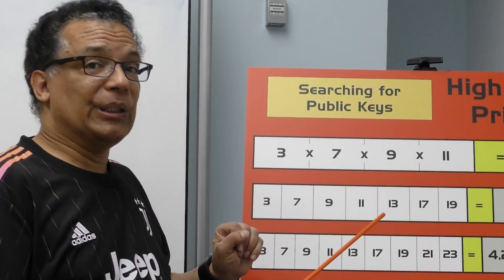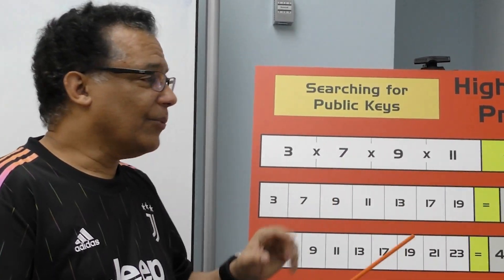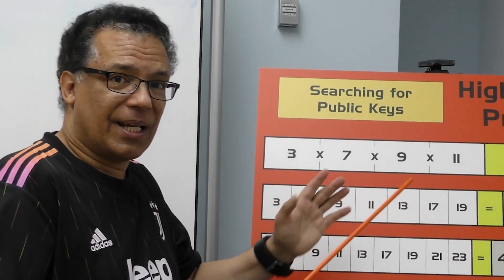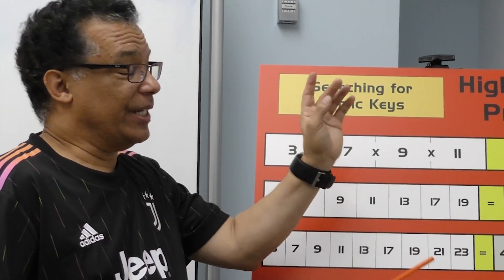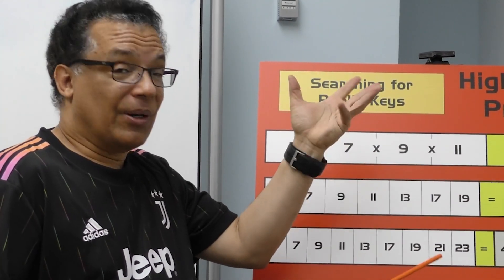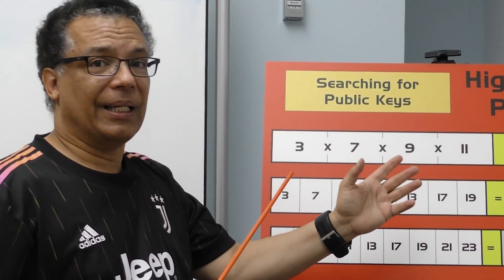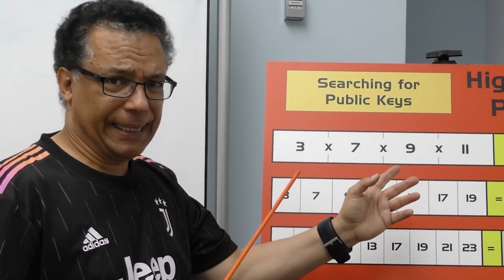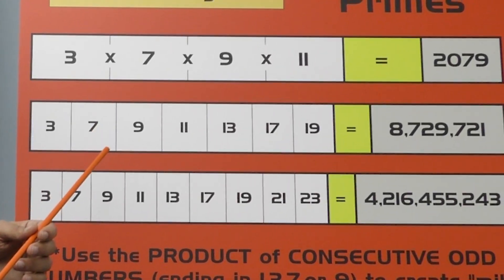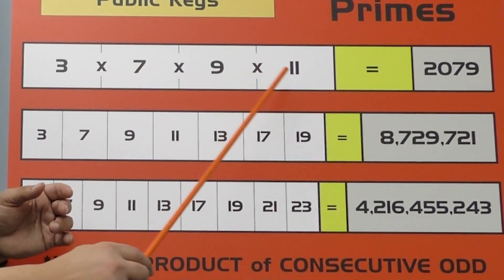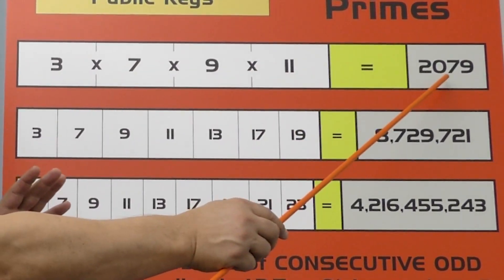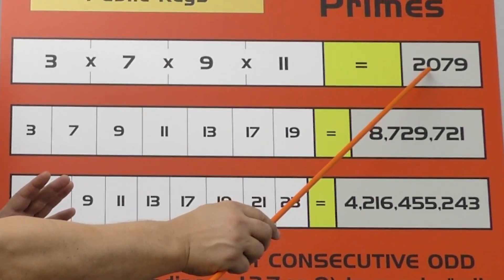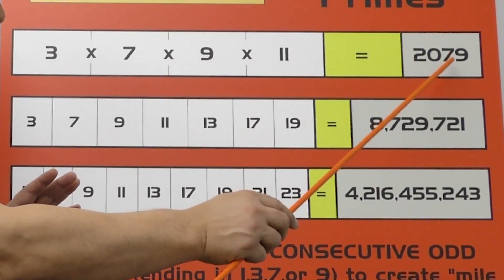We want to do it the BAM way. We want to create a large composite because we know when we find a large composite with a lot of factors very nearby, we're going to find a prime number or a public key. So here we have 3 times 7 times 9 times 11 — a 4-digit composite: 2079.